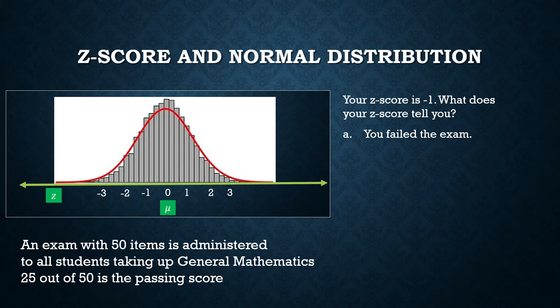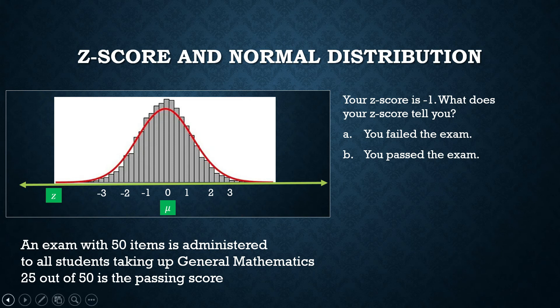Actually, we do not know, because negative one does not tell you your actual score — it tells you your relative position in relation to the mean. We don't know the mean score. Your score is one standard deviation below the mean score, but we cannot tell whether you passed or failed the exam. The passing score is 25 and above, so it is possible you passed or possible you failed.